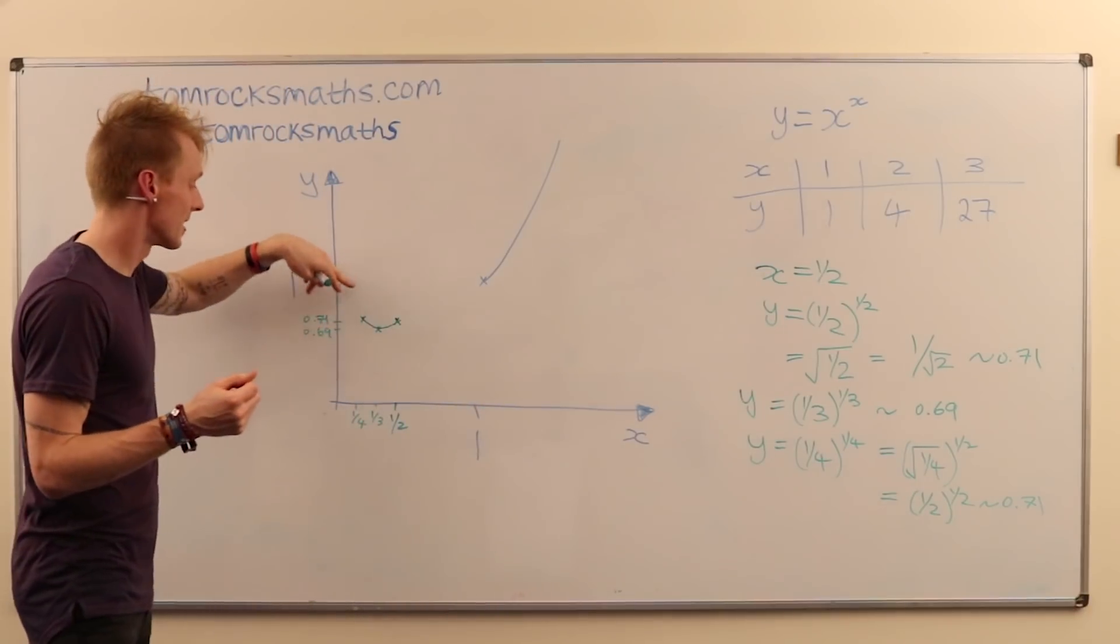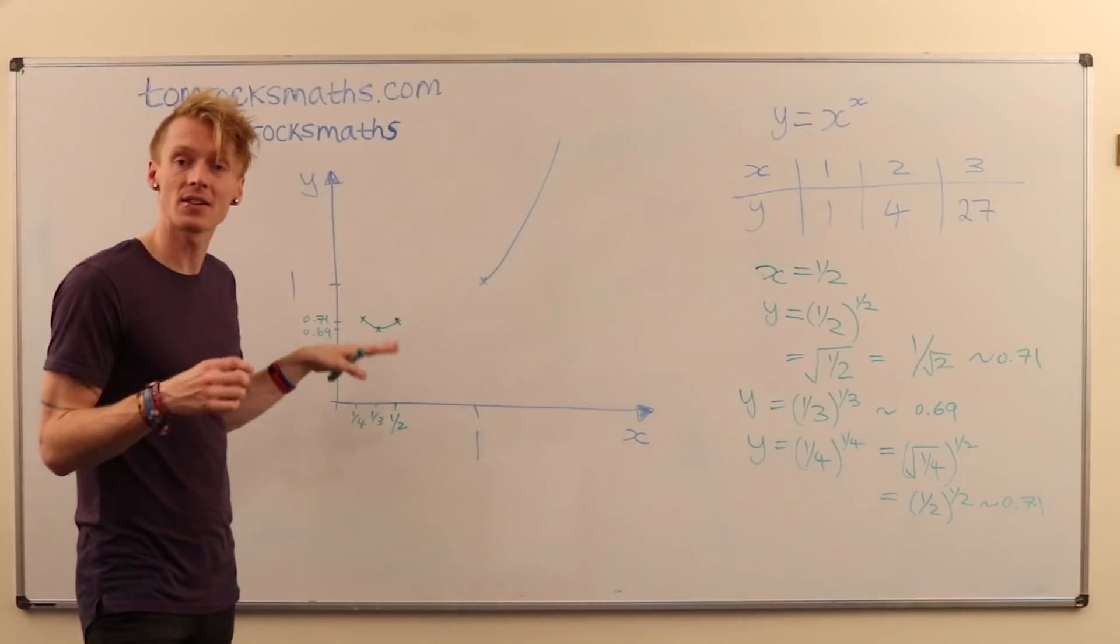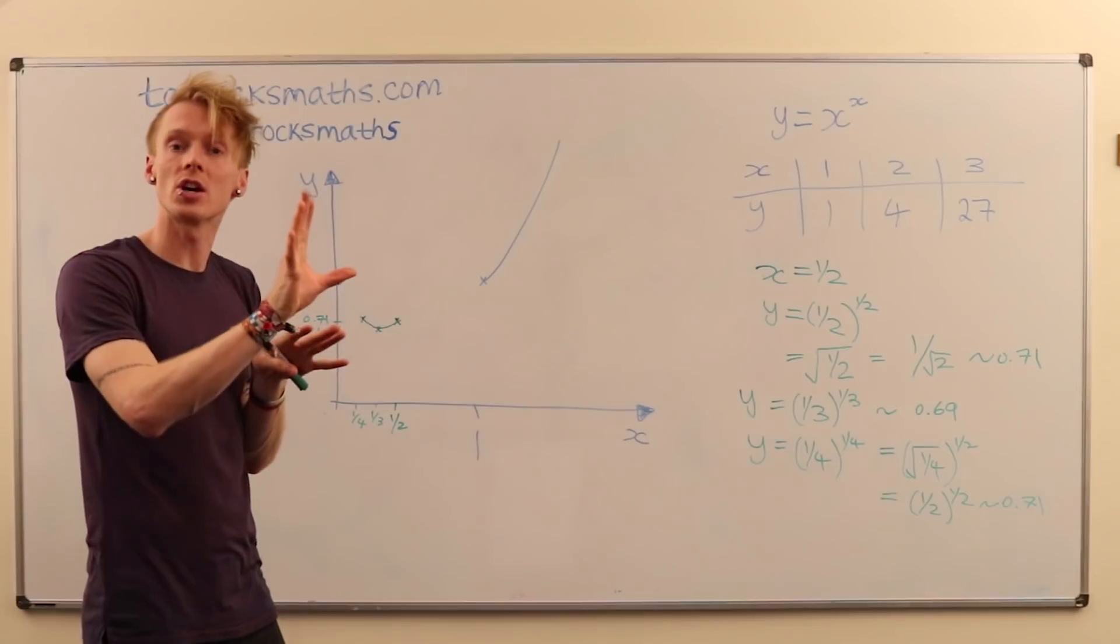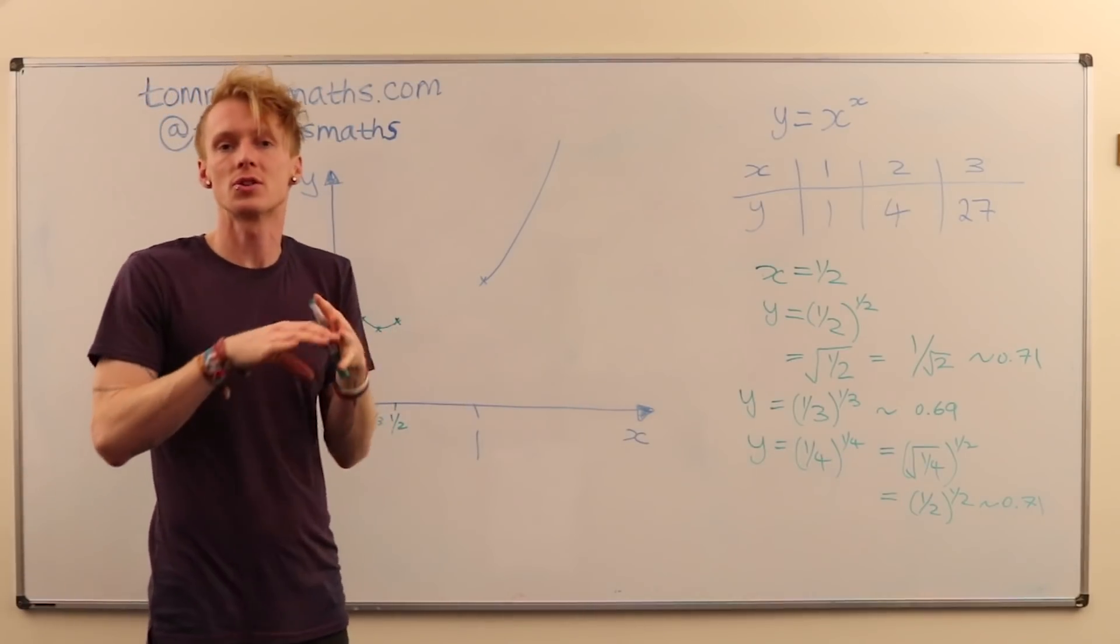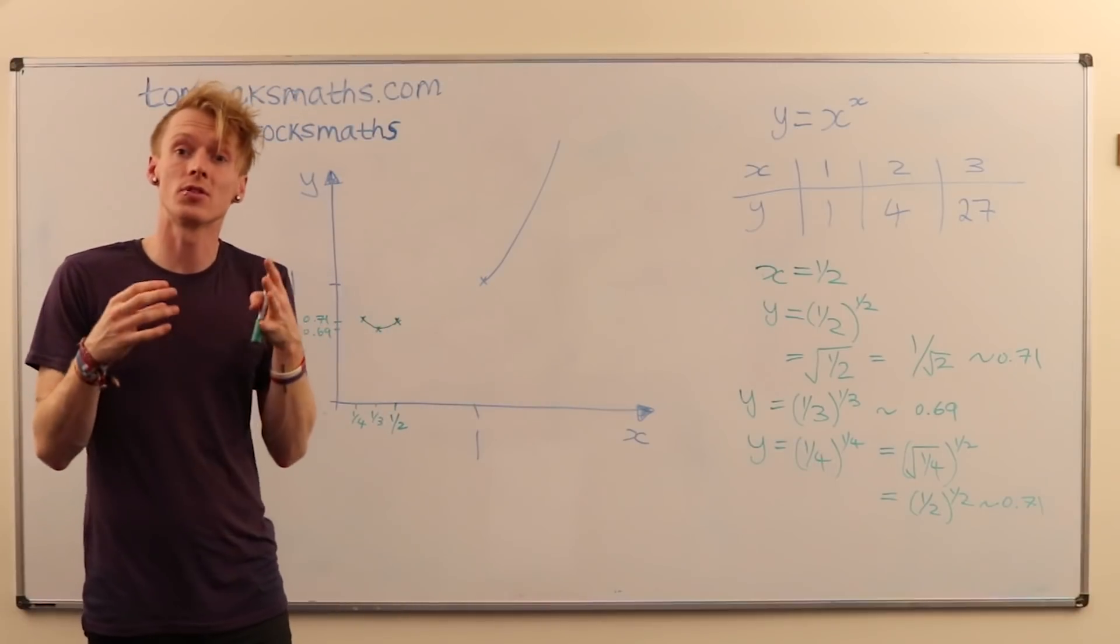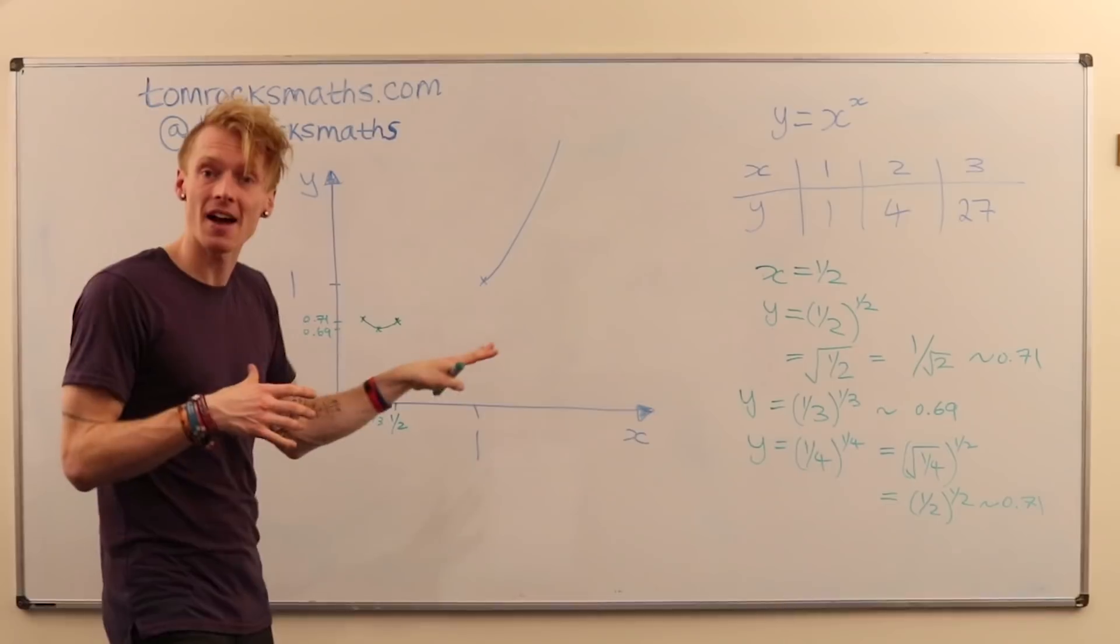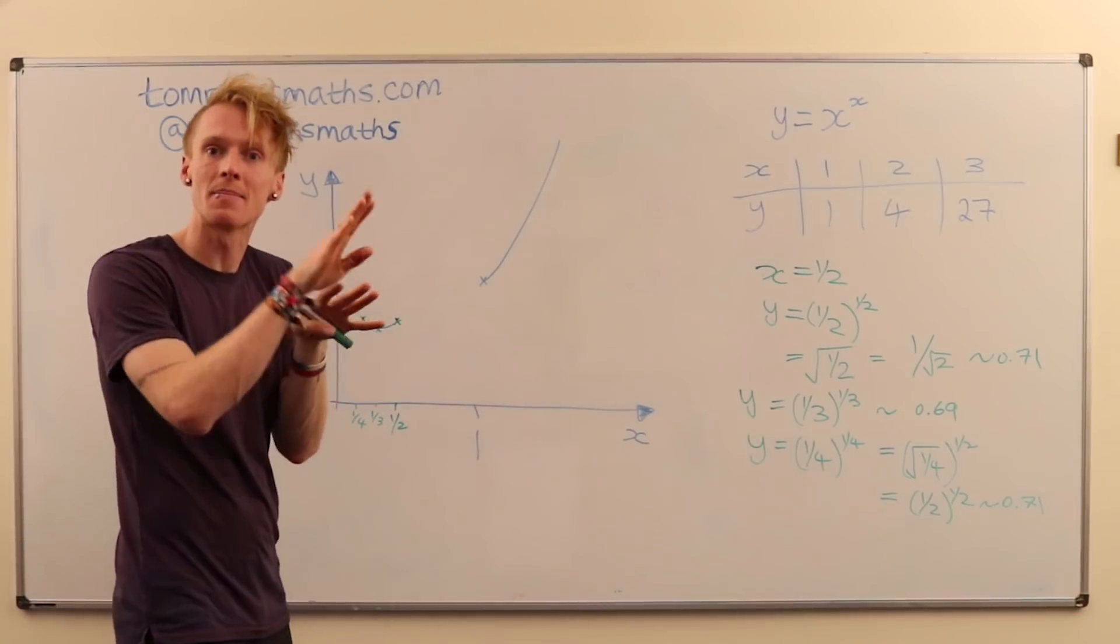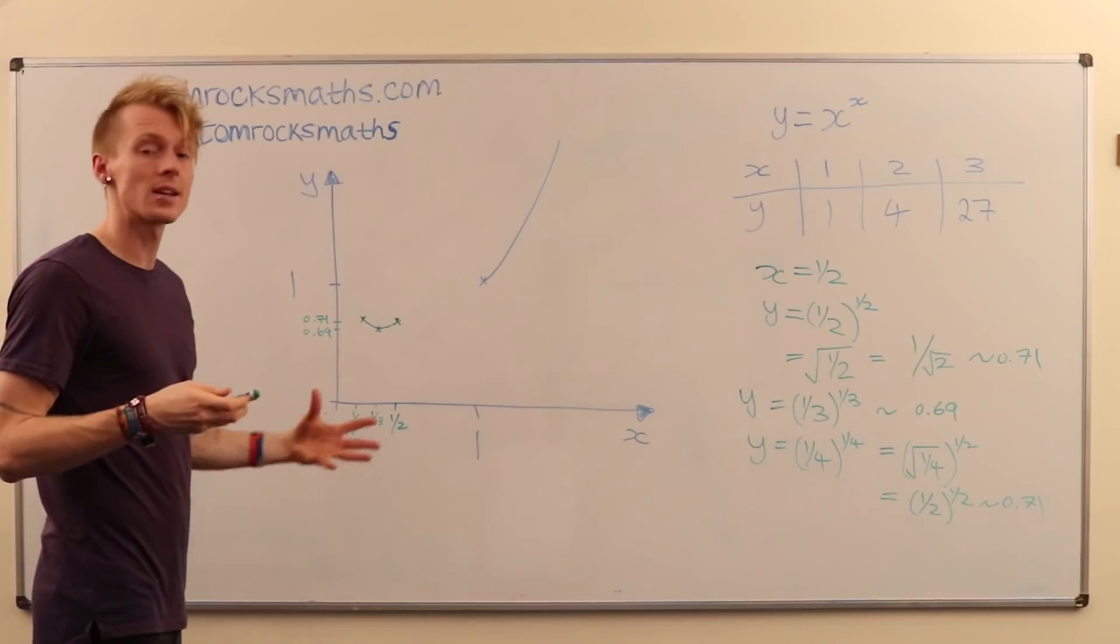So we have a decreasing section and then it begins to increase. We can calculate the exact value at which this change occurs, but for our purposes we don't need to. We don't need to be that accurate. We just want an idea of the general shape of the graph. And we know here that it has to have this turning point, this u-shape bend in its plot.